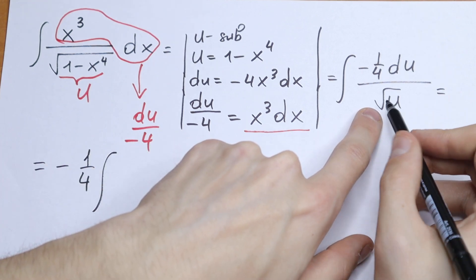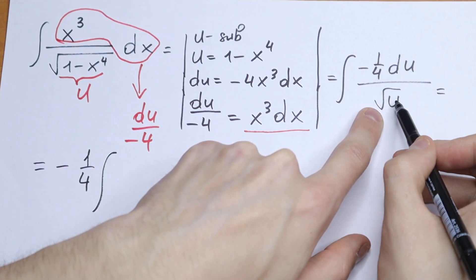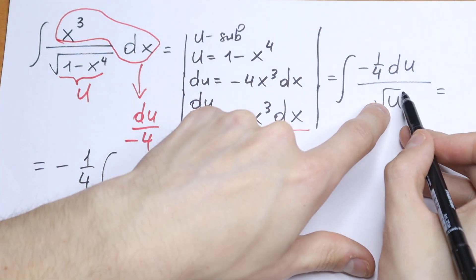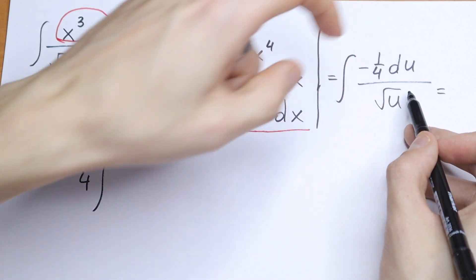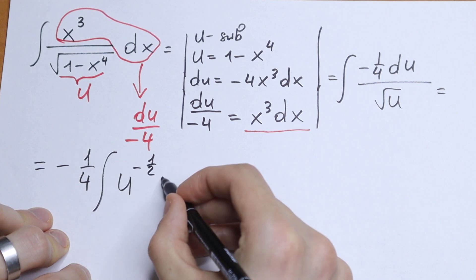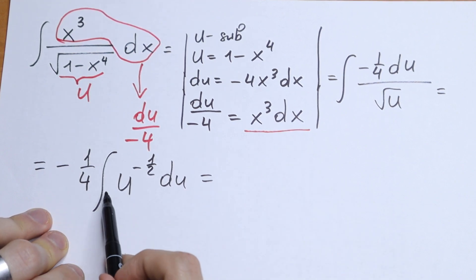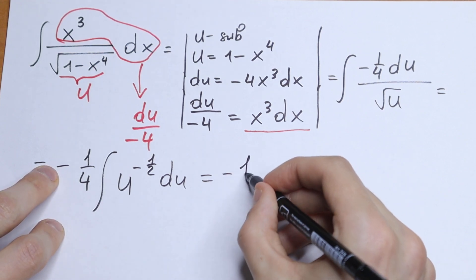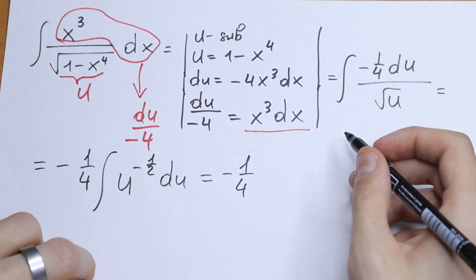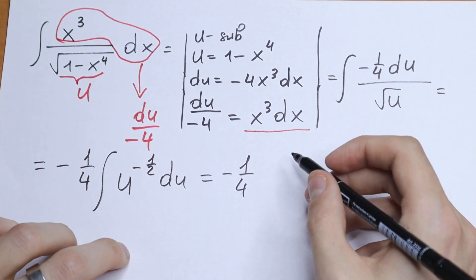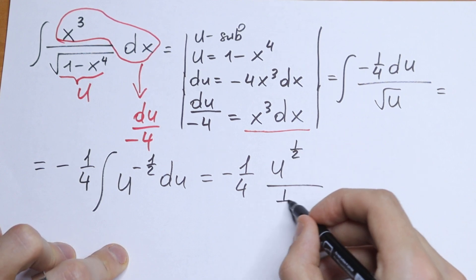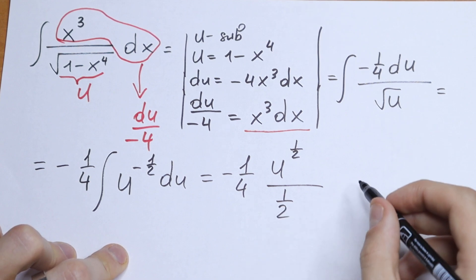Instead of writing the square root of u in the denominator, we write it as u to the power minus 1 half. This is a classic case: we add 1 to the exponent and divide by the new exponent. So minus 1 half plus 1 gives us u to the power 1 half, divided by 1 half, plus C.